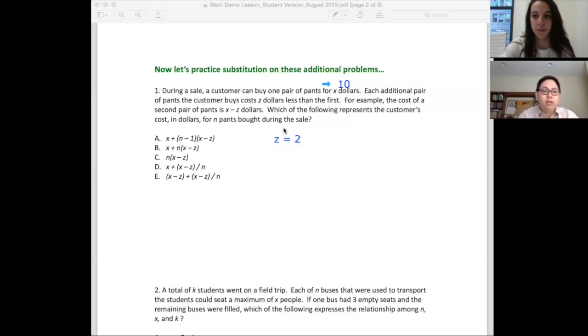Eight dollars, right. So x minus z equals 8. Things are much more concrete now, so let's solve this problem. Which of the following represents the customer's cost in dollars for n pants during the sale? Let's say n = 2. Essentially, we're trying to determine which represents the customer's cost for n pants bought during the sale.